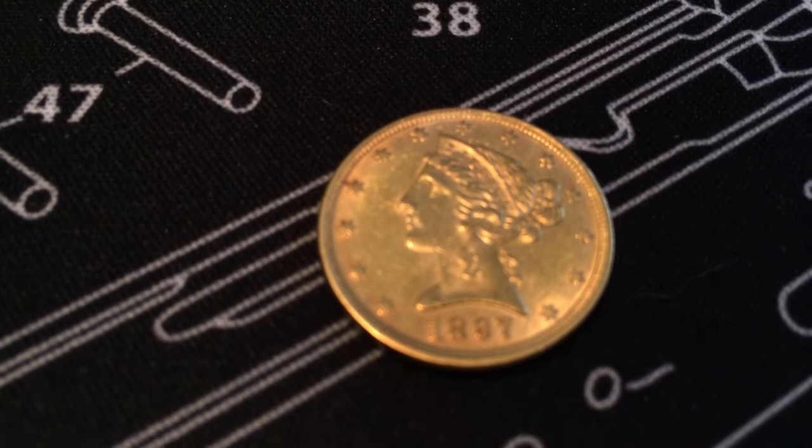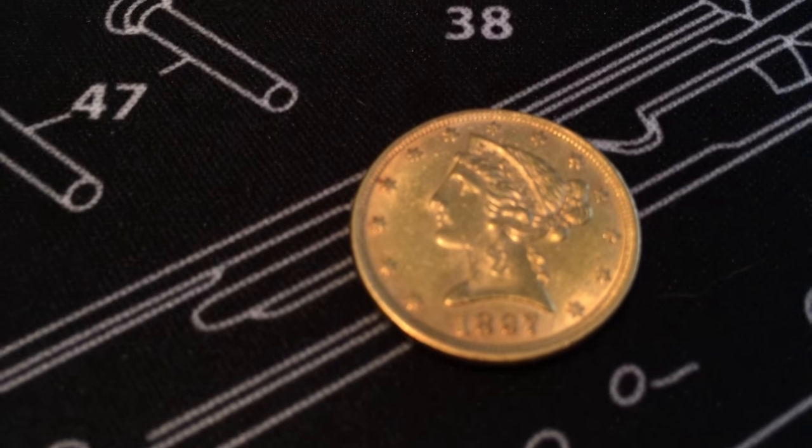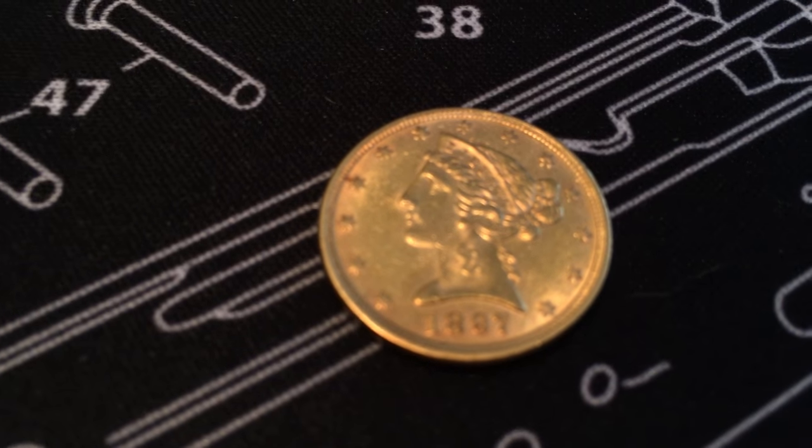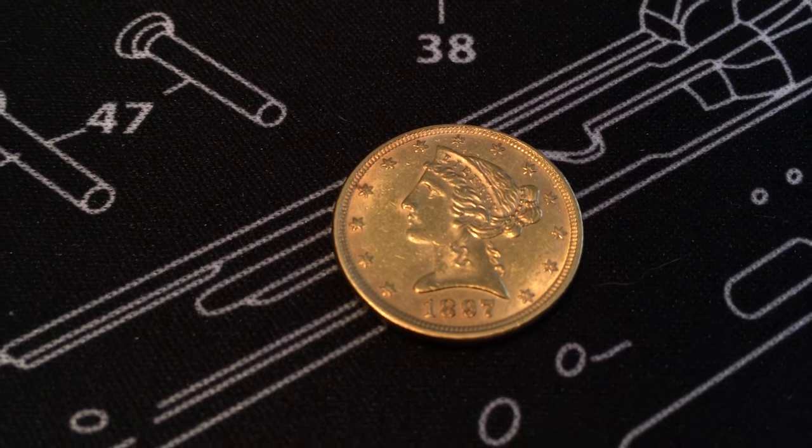Now we also got a $5 Liberty, this one looks like 1897, also supposed to be AU.